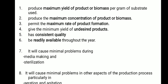The second criterion is to produce the maximum concentration of product or biomass. Microorganisms have the ability to produce different types of products, and some can produce two or three types of intracellular or extracellular products. Whichever is our desirable product, that product concentration should be maximum. For this purpose, media optimization is carried out. The third criterion is that it permits the maximum rate of product formation, meaning more product is produced in lesser time.